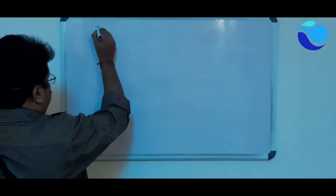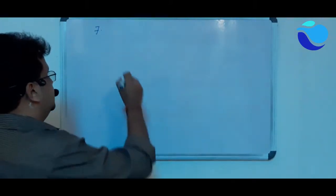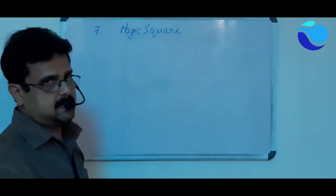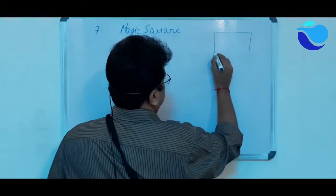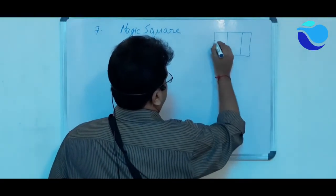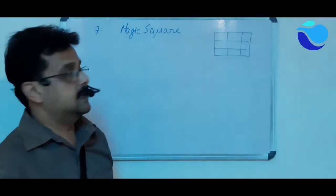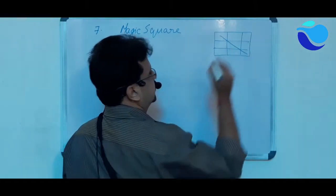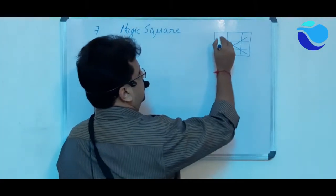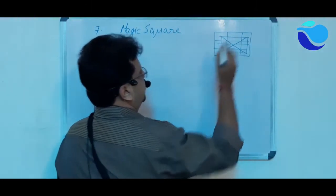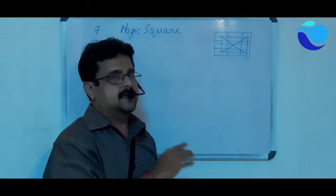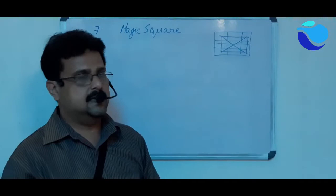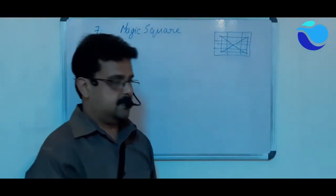Before doing question number 7, you need to understand what a magic square is. A magic square contains a grid of numbers. The speciality of a magic square is that if you add the numbers diagonally, vertically, or horizontally — however you add the numbers in those squares — you will always get the same answer.